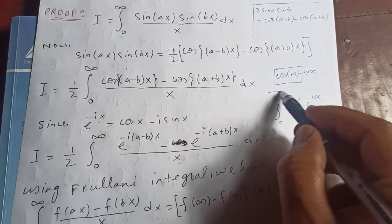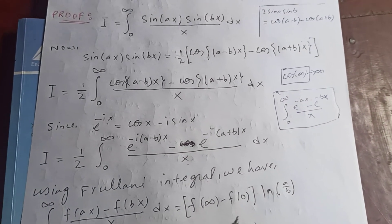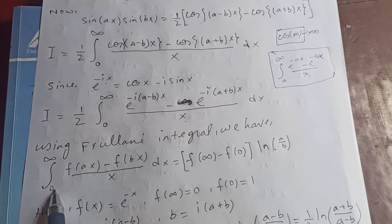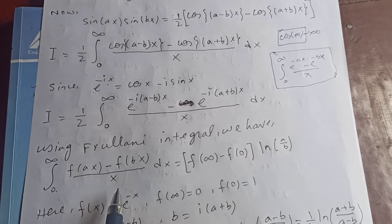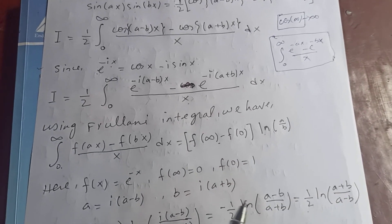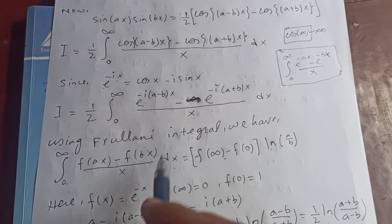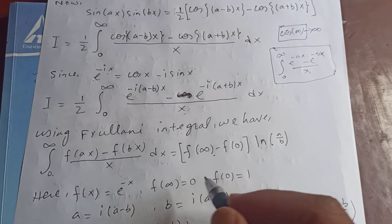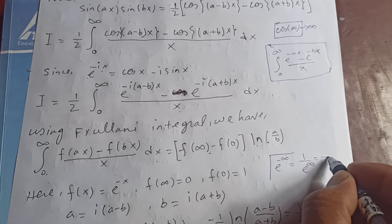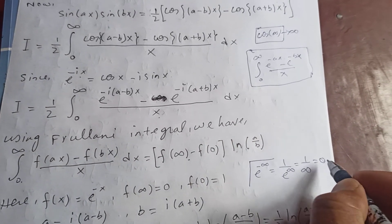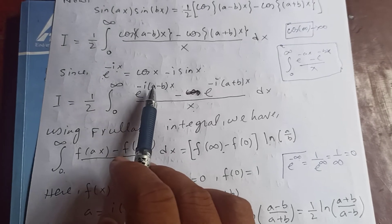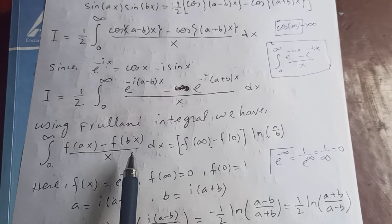We've discussed this type of integral before, but let's solve it again using the Frullani integral. The Frullani integral states: integral from zero to infinity of [f(ax) − f(bx)] over x dx equals [f(∞) − f(0)]·ln(a/b). Here f(x) = e^(−x), so f(∞) = e^(−∞) = 0, and f(0) = e^0 = 1. Our a is i(a−b) and our b is i(a+b).